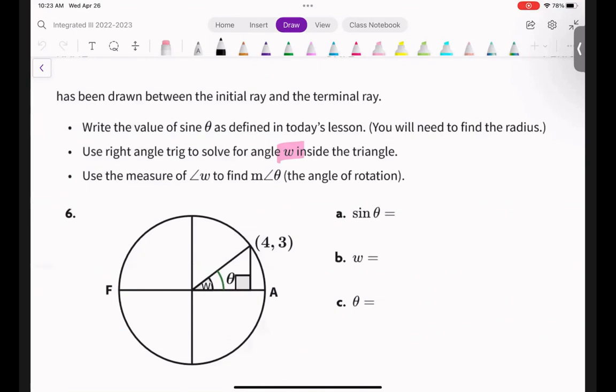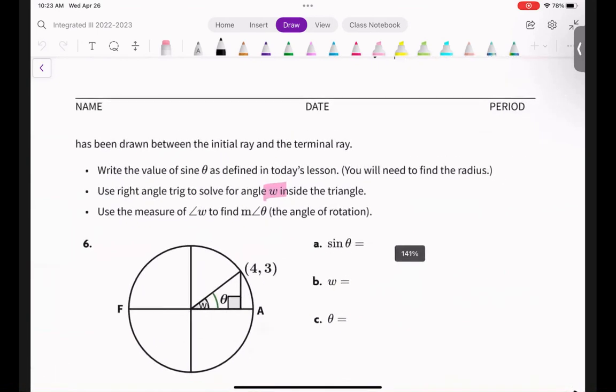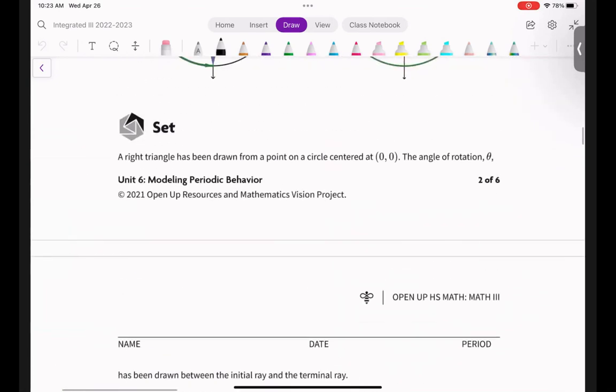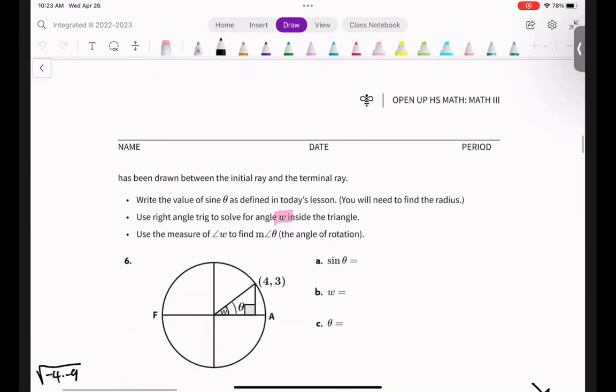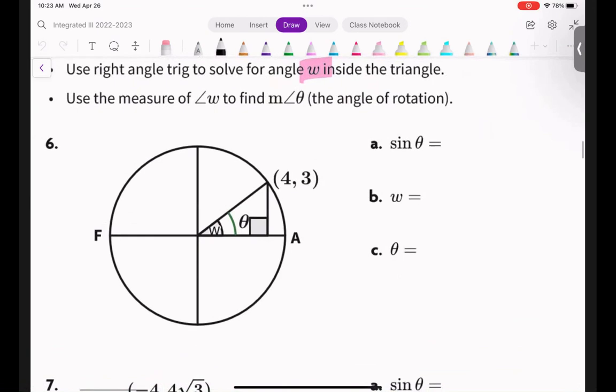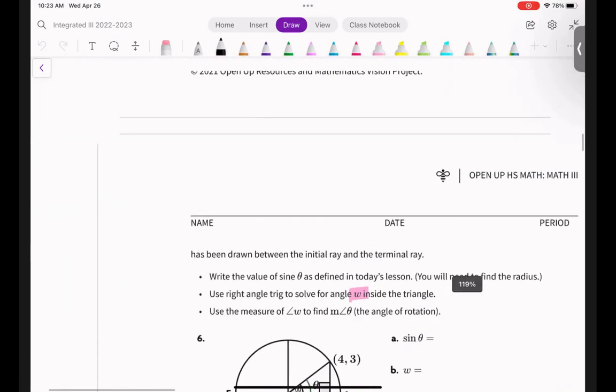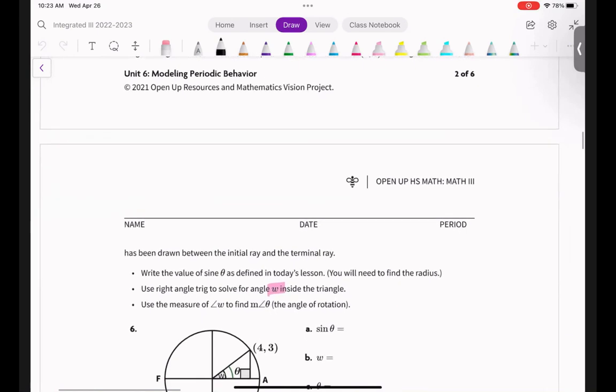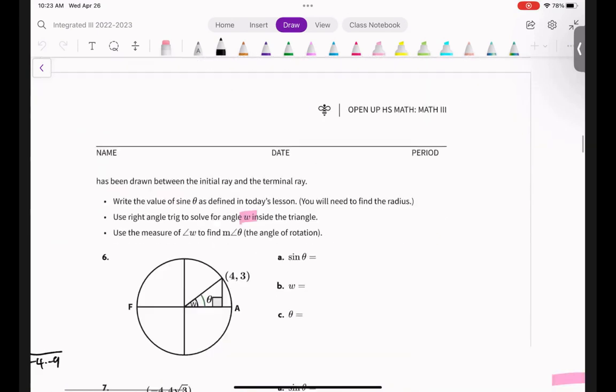So what this is asking us to do, let's get the directions. A right triangle has been drawn from a point centered at (0,0). The angle of rotation is theta. Does everybody see theta? That green arc there. Good. And then it says has been drawn between the initial ray and the terminal ray.